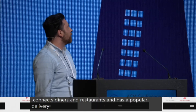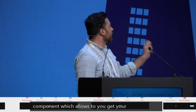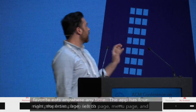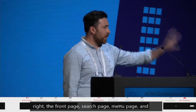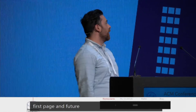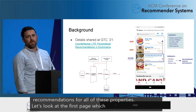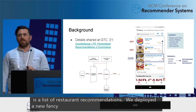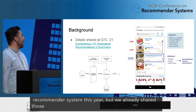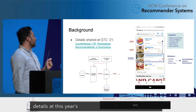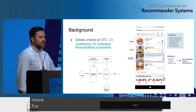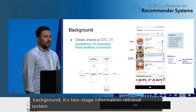The app has four main properties from left to right: the front page, search page, menu page, and your profile page. For today's talk, we're going to focus on the first page, and we feature recommendations across all these properties. Let's look at this first page, which is a list of restaurant recommendations. We deployed a new fancy recommender system this year, but we already shared those details at this year's NVIDIA GTC conference, so check that out if you want to learn more. It's a classic two-stage information retrieval system where we have a candidate selection stage, which gets a high-recall set that's filtered, then ranked, then calibrated.